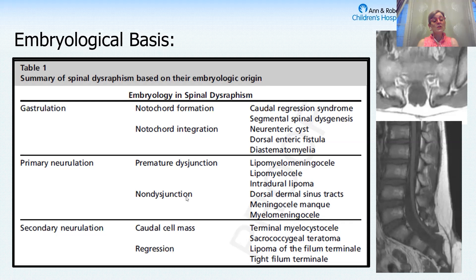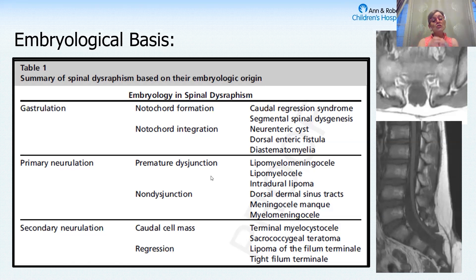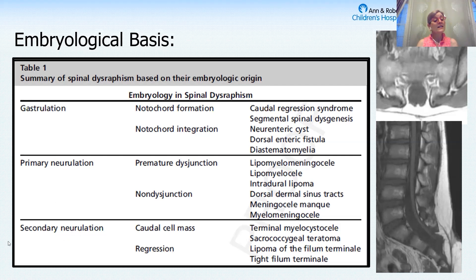Where the ectoderm and the neuroectoderm remain attached, that's what gives you the dermal sinus or the meningocele. Premature disjunction is where the neuroectoderm pulls away from the ectoderm too early, allowing the mesoderm to have access. The mesoderm forms the lipoma, which gives you the lipomyelomeningocele.